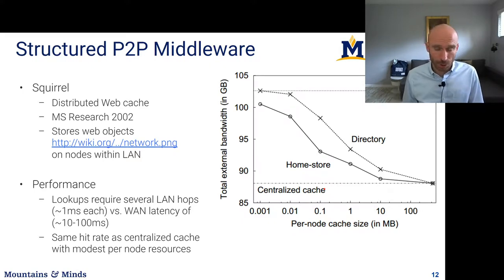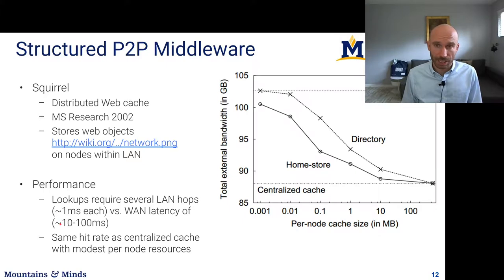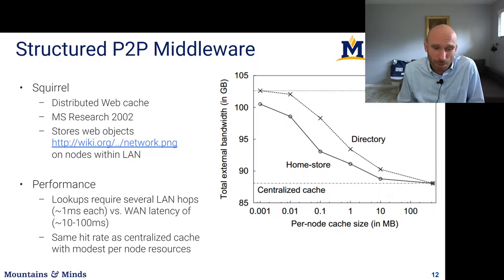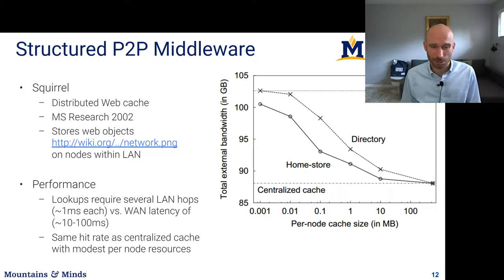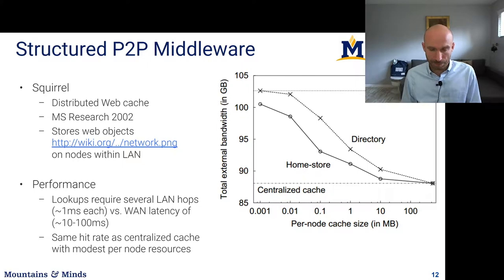This works okay in LAN networks where there's low delay between individual nodes, but doesn't work very well in wide area networks where latency is much higher and the number of hops in a DHT becomes an impediment to good performance.